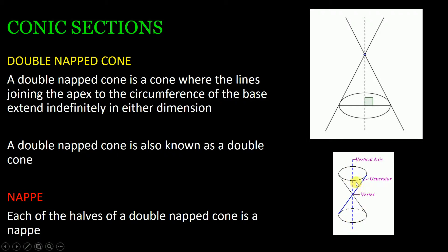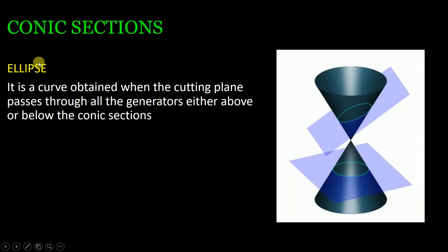The vertical line is called the axis, and the point at which the two cones meet is called the vertex. So a double nappe cone is also known as a double cone — whether you call it a double cone or simply a double nappe cone, it means the same thing.